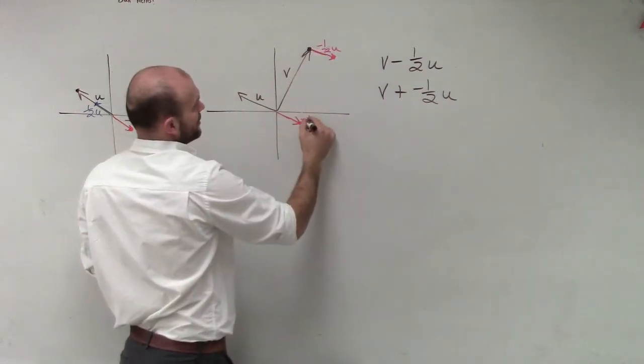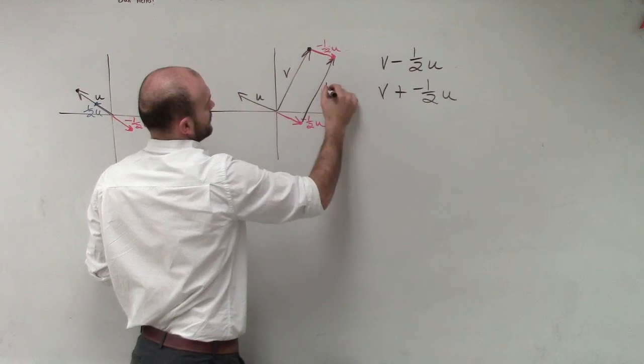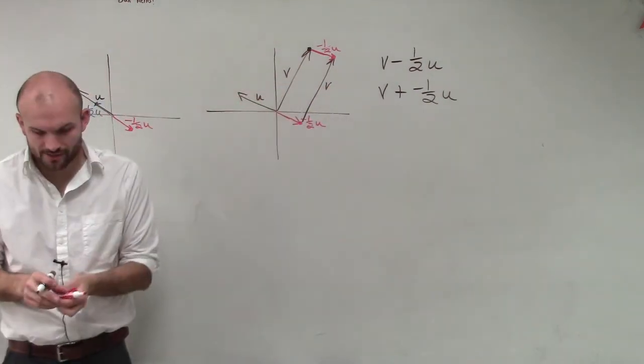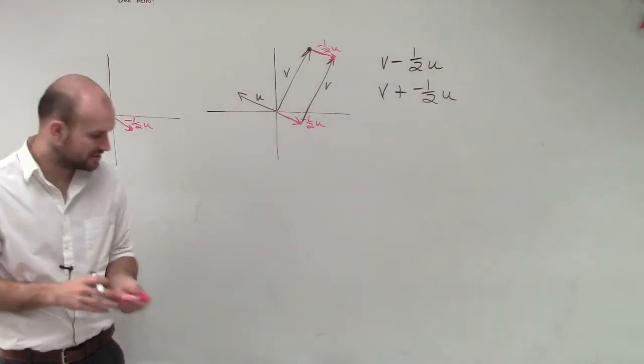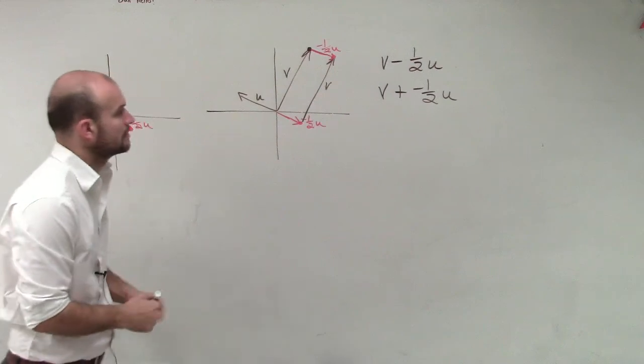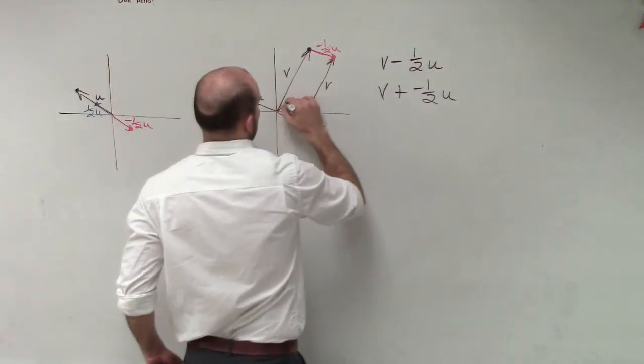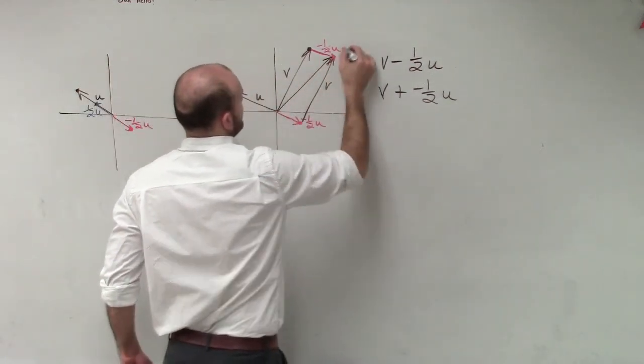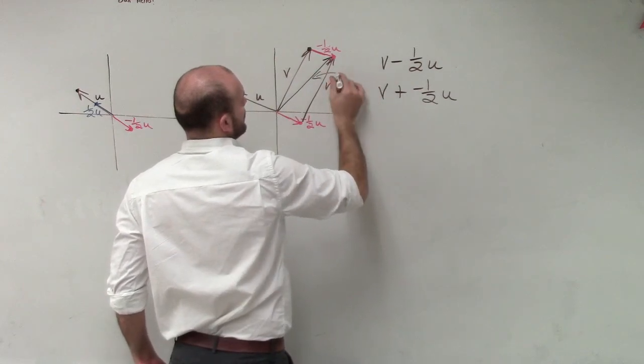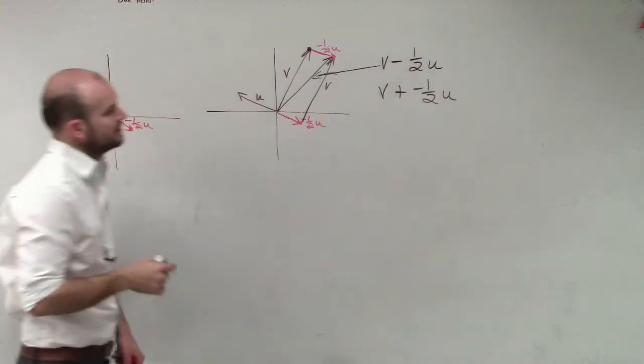Or you could do it with the other angles. All you do is just take the other side and create a parallelogram that you can use to find your resultant vector, which is right there.